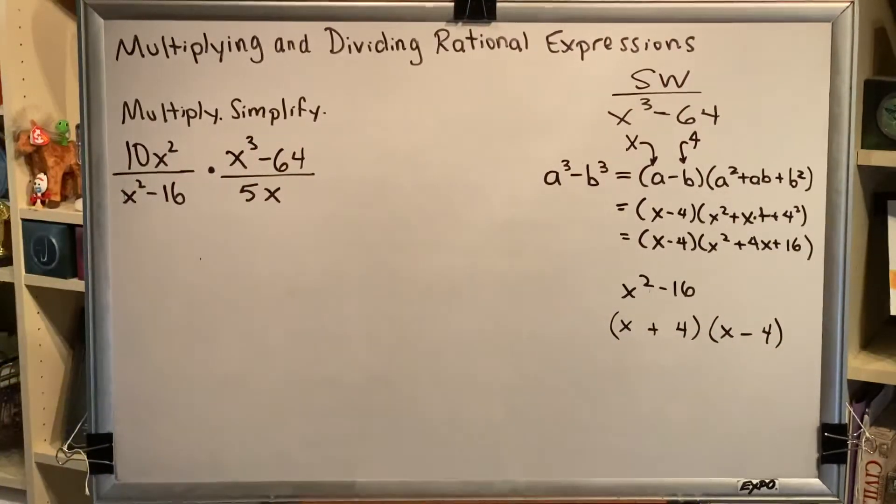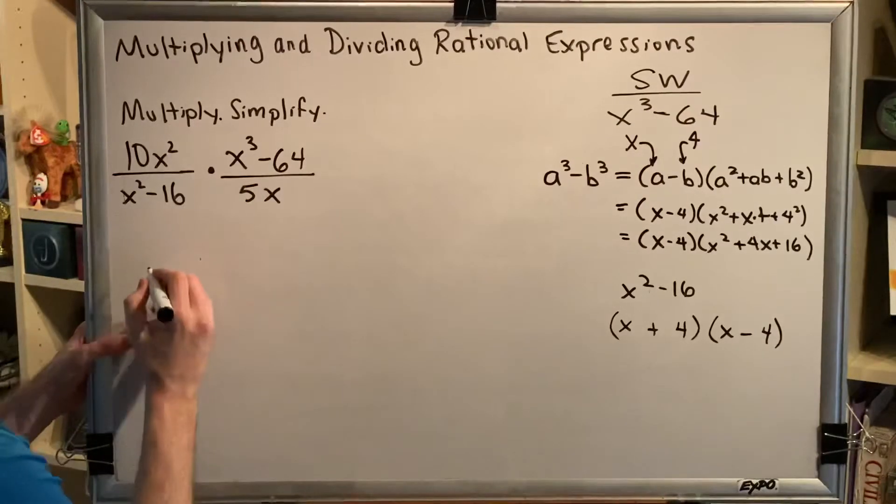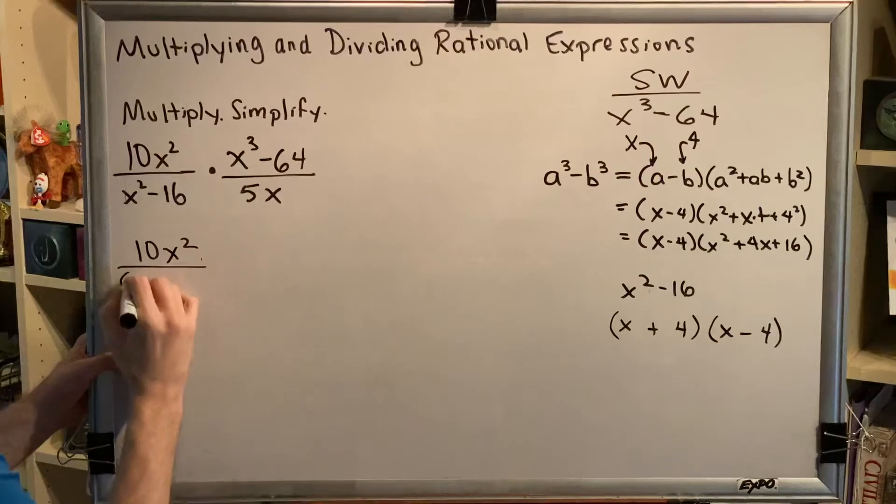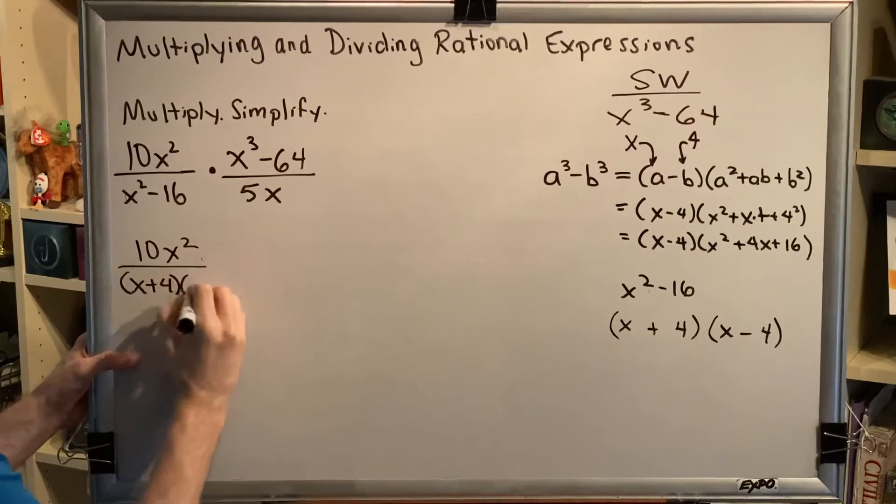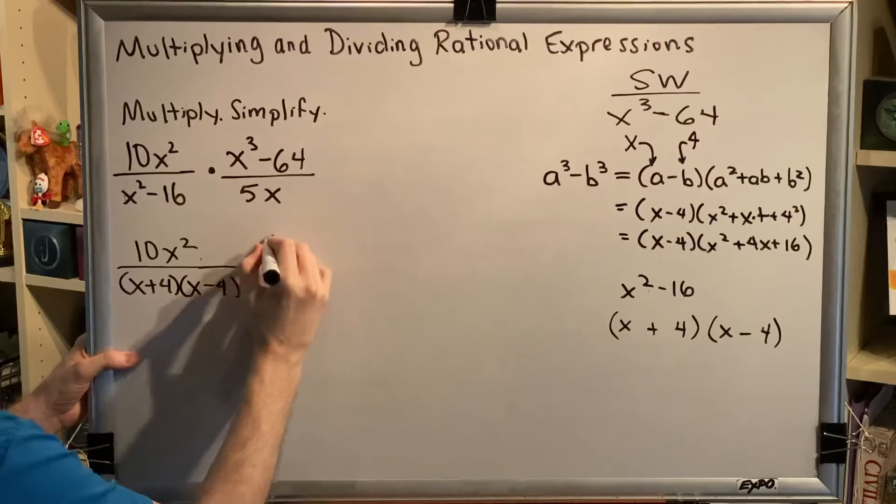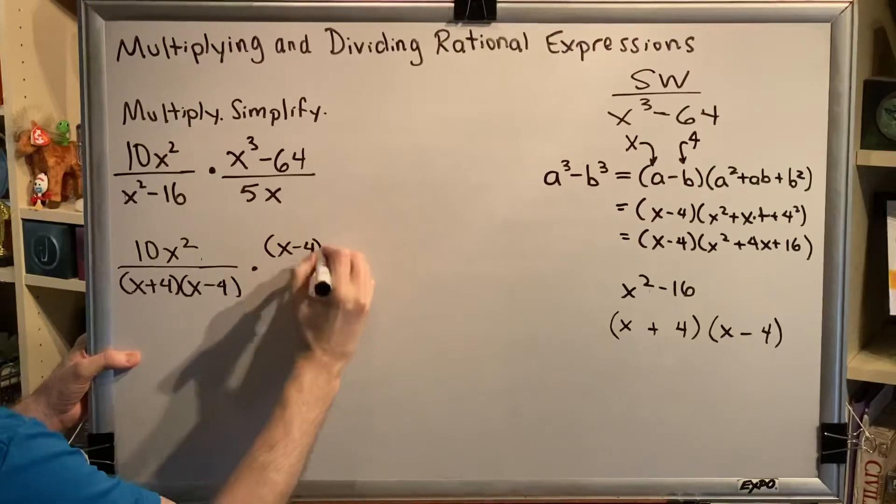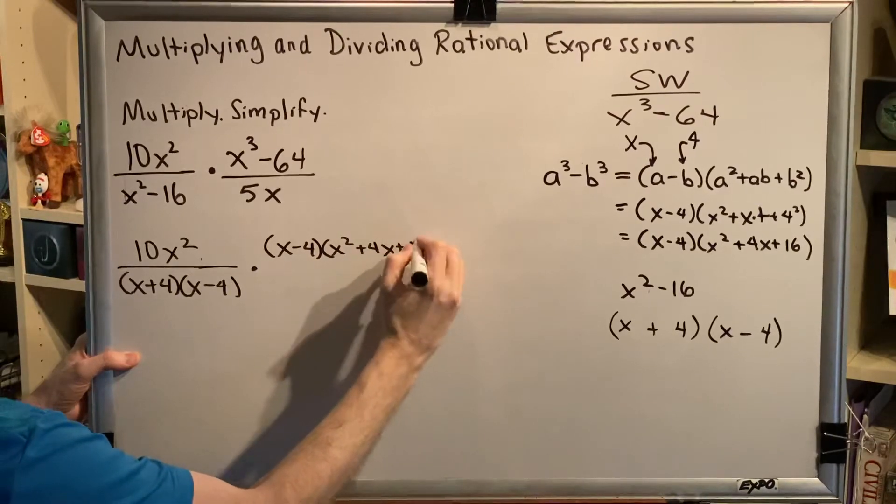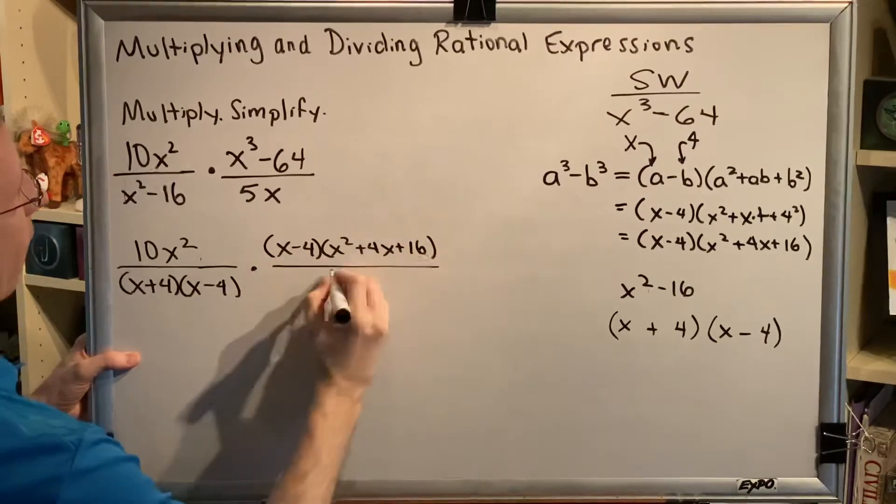So now that we've got our factors, we're ready to come back to our original problem. So we have 10x² over (x+4)(x-4) times (x-4)(x²+4x+16) over 5x.